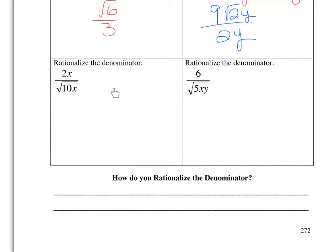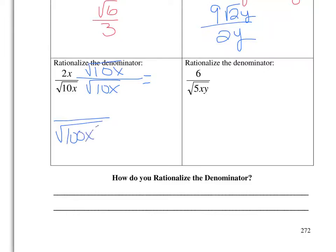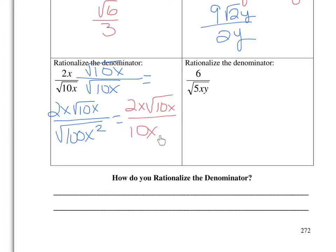To rationalize the next problem, I'm going to multiply the numerator and the denominator by the square root of 10x. The square root of 10x times the square root of 10x is the square root of 100x squared in the denominator. The numerator is 2x times the square root of 10x. Once I simplify the denominator — the square root of 100 is 10 and the square root of x squared is x — the coefficients reduce: 2 reduces with 10 to give 1 fifth, and the x's also cancel. So the final answer is the square root of 10x over 5. You don't need to write the 1 coefficient.